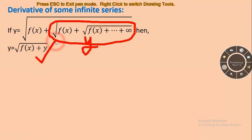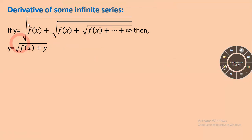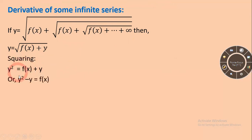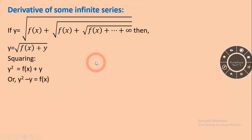So we write y equal to square root of f(x) plus y. Squaring both sides, you will get y squared equal to f(x) plus y, which gives y squared minus y equal to f(x).